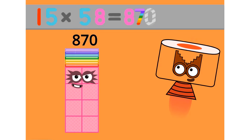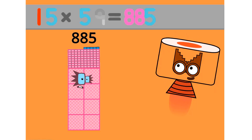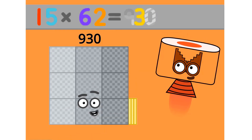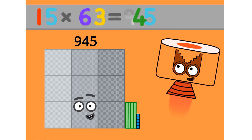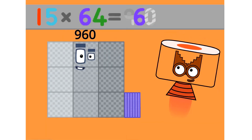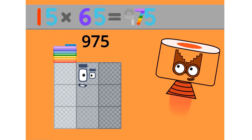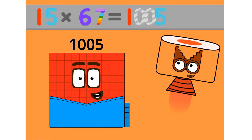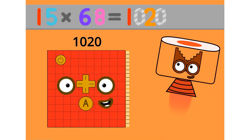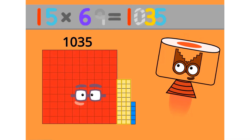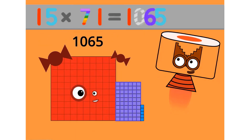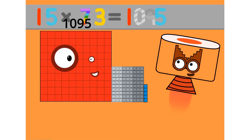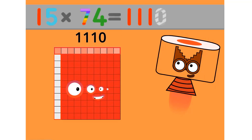15 x 54 equals 810. 15 x 55 equals 825. 15 x 56 equals 840. 15 x 57 equals 855. 15 x 58 equals 870. 15 x 59 equals 885. 15 x 60 equals 900. 15 x 61 equals 915.